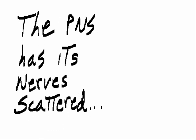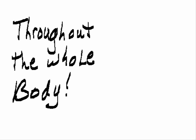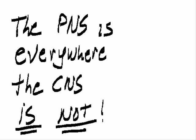The PNS, the peripheral nervous system. The PNS has its nerves scattered throughout the whole body. The PNS is everywhere the CNS is not.